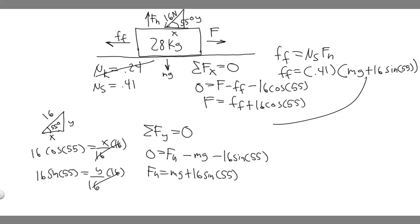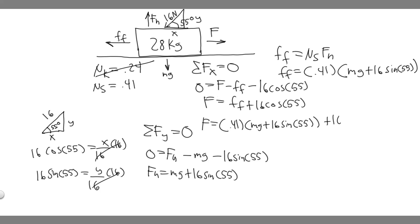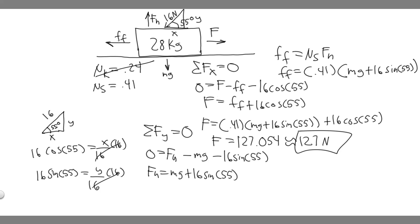Now we plug the force of friction into our x-direction equation: F equals 0.41 times (mg plus 16 times sine of 55) plus 16 times cosine of 55. When you calculate this, you get F equals approximately 127.054 newtons, which we round to 127 newtons. So 127 newtons is the force required to get this box to move. Hopefully you found this useful.